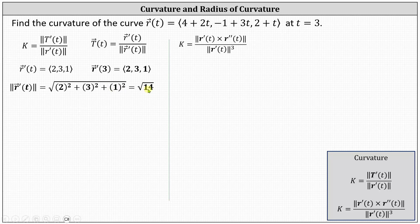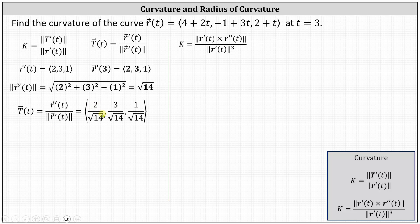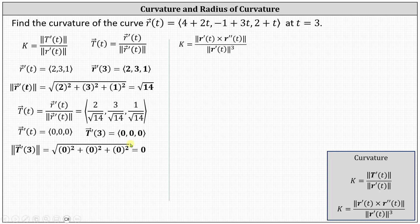Now we can determine T of t, the unit tangent vector function, which equals r prime of t divided by the magnitude of r prime of t. This once again gives us a constant vector. Therefore, T prime of t is equal to the zero vector, regardless of the value of t, which also indicates that T prime of 3 is equal to the zero vector. The magnitude of the zero vector is equal to zero, indicating the numerator of the fraction equal to the curvature is equal to zero.